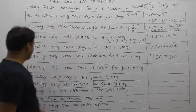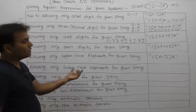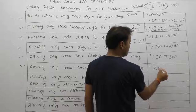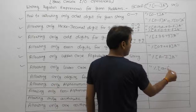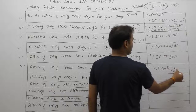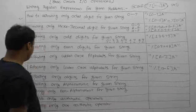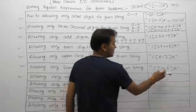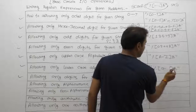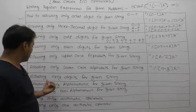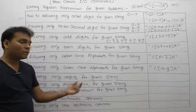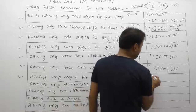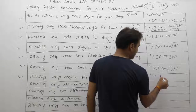Similarly, allowing only lowercase alphabets for a given string — the corresponding regular expression is: percent, square bracket, a to z (lowercase), closing square bracket, 's'. Also, a correction: for uppercase it is A to Z, not A to F as mentioned earlier. Next, allowing only digits for a given string — allowing digits means only from 0 to 9.